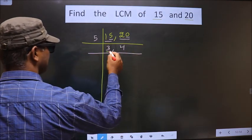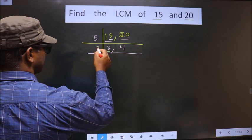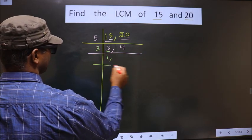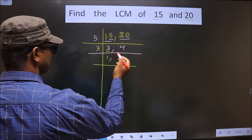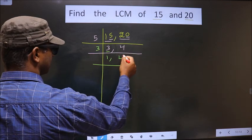Now here we have 3. 3 is a prime number, so we take 3 once. 4 is not divisible by 3, so we write 4 as it is.